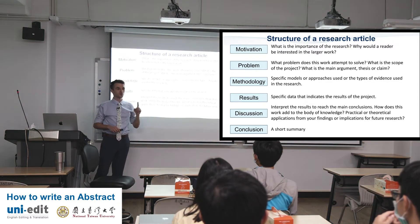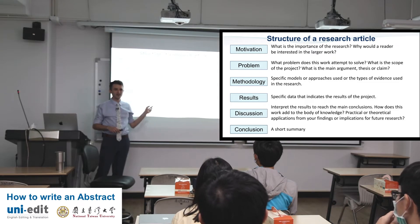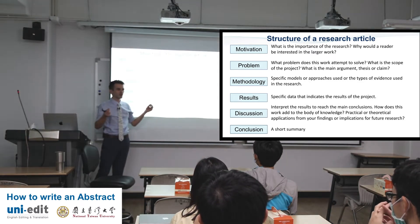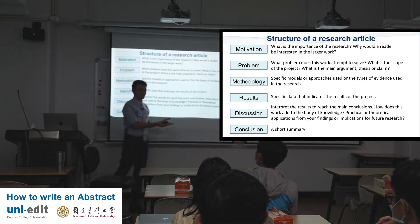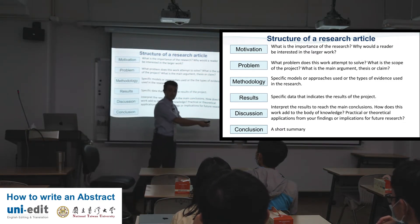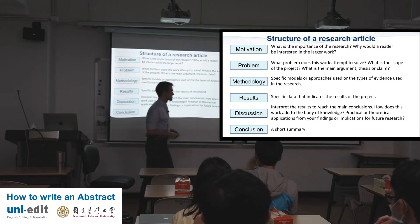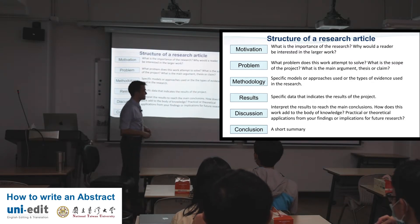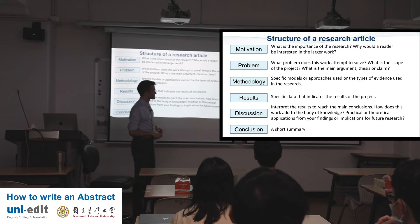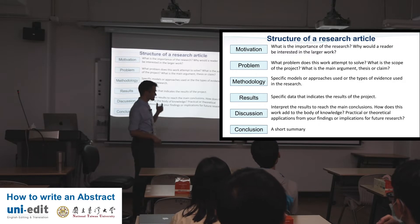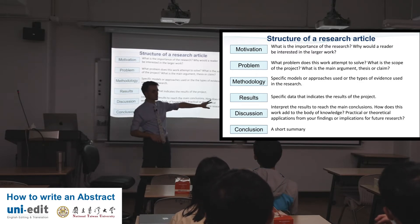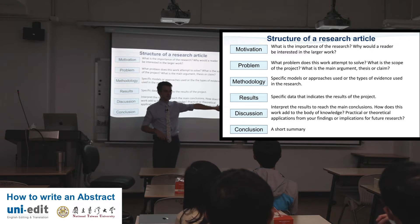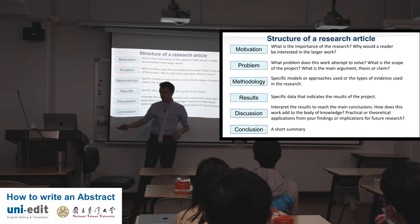If I had to read one section of every paper, I might choose the discussion section, because this is when the author tells you: my research is important because this is how the industry will be affected, this is what you should do. Discussion is a great place to end an abstract — keep that in mind.